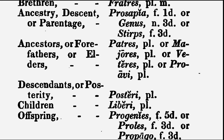The descendants, or your posterity, is posteri — posteri, plural. Children: liberi, liberi. And offspring in the general sense: progenies — heike progenies. Heike proles, heike proles. Or heike propago, heike propago.